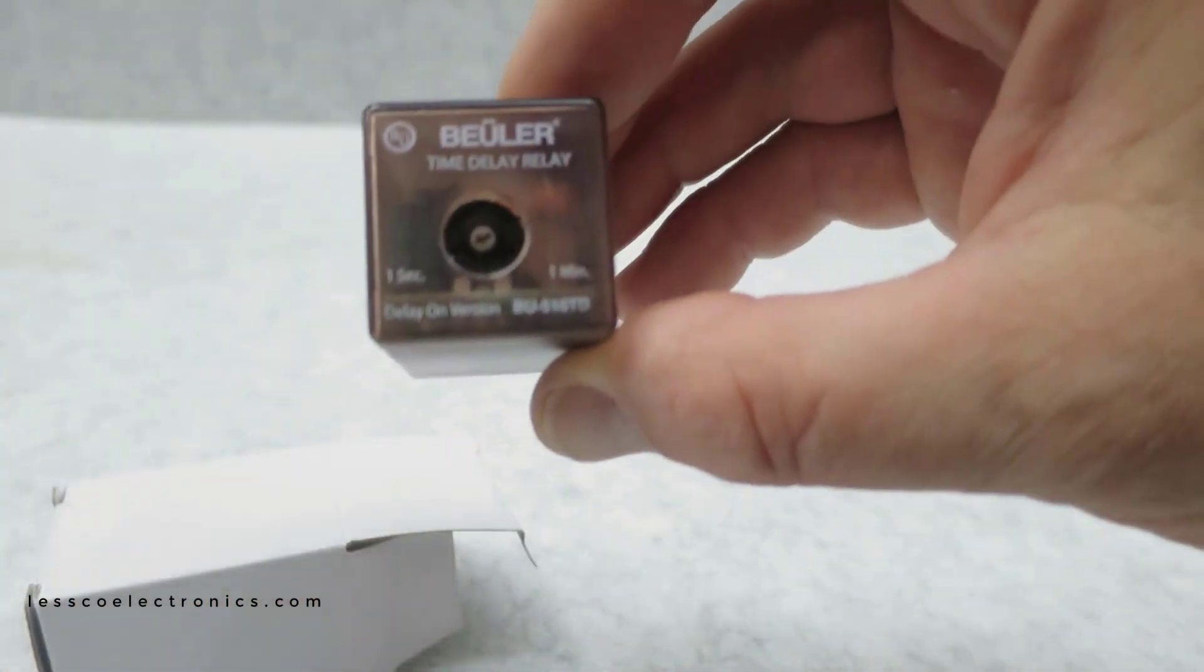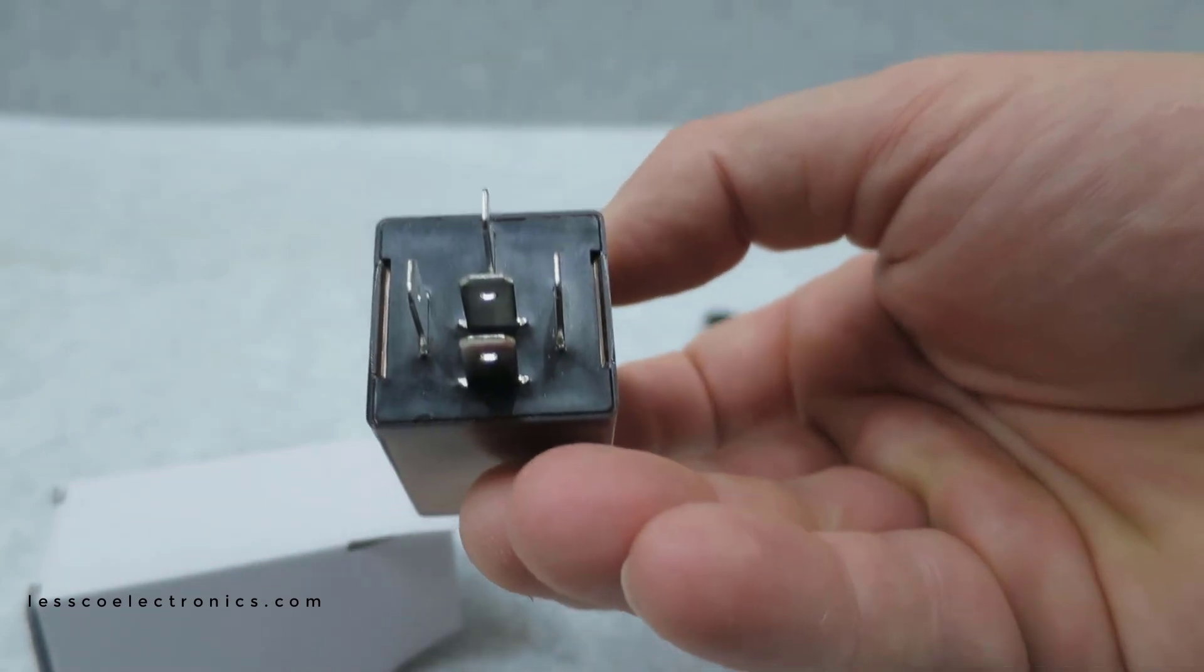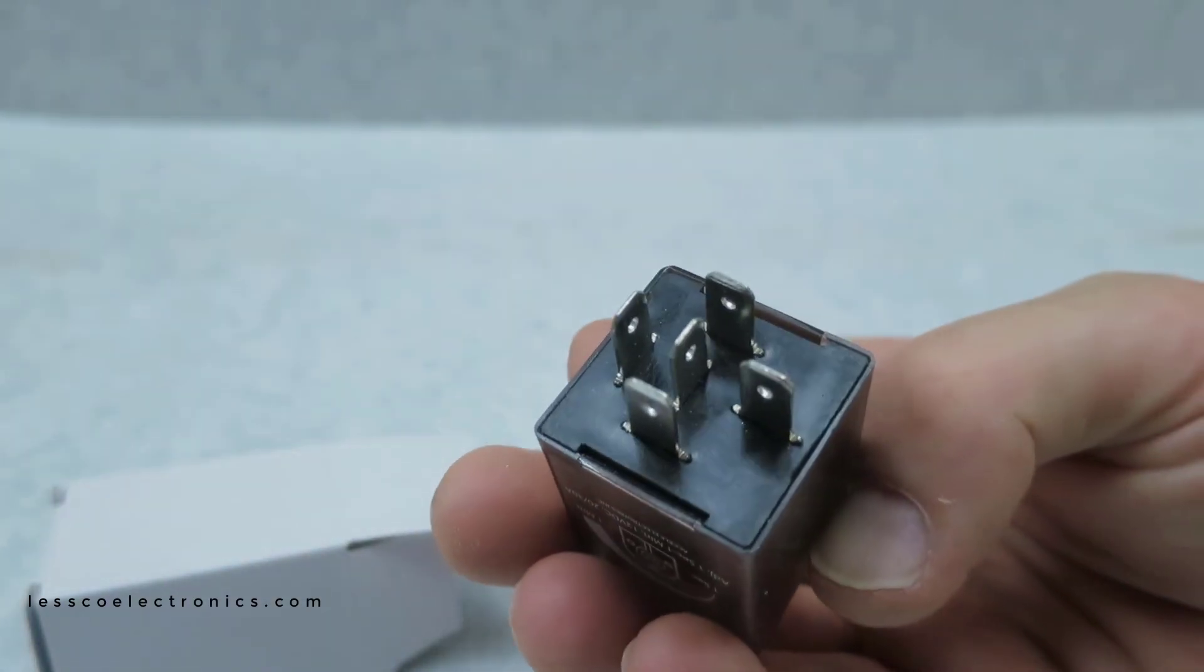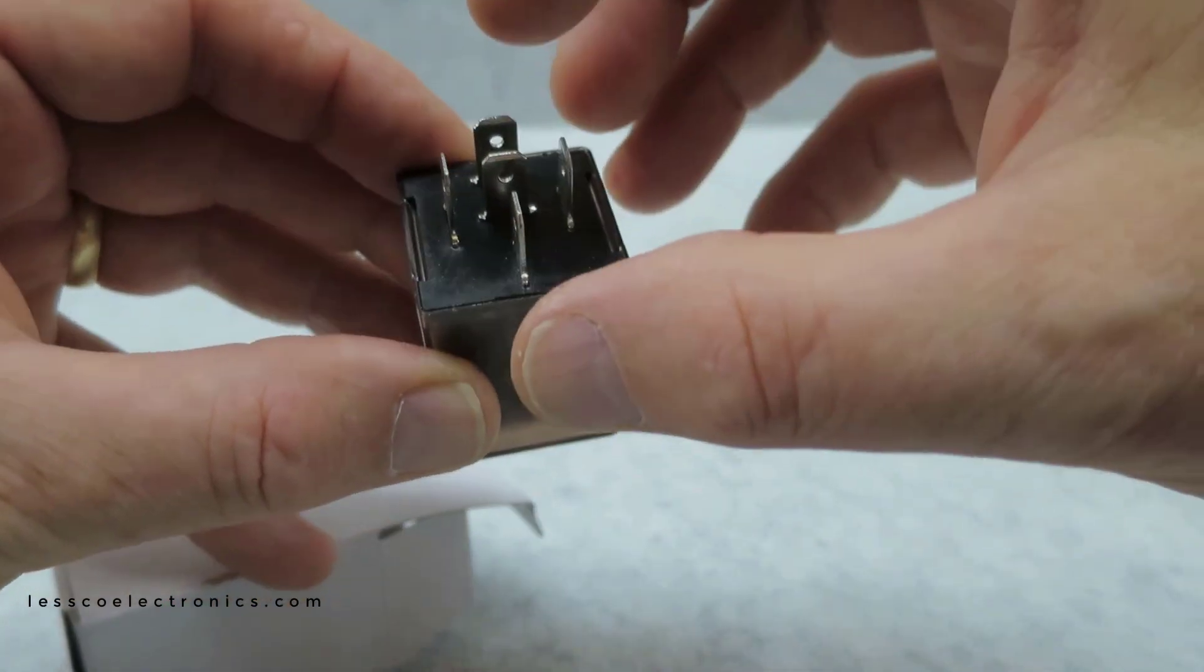Waterproof, nice little potentiometer right on top for ease of installation, and then the bottom side you'll see you got five pins, which means it's a single pole double throw, which means you have the coil and you have normally open, normally closed.